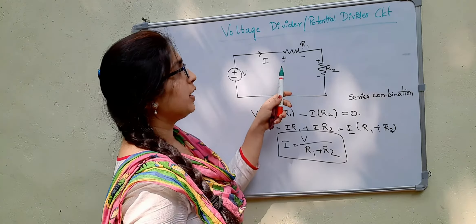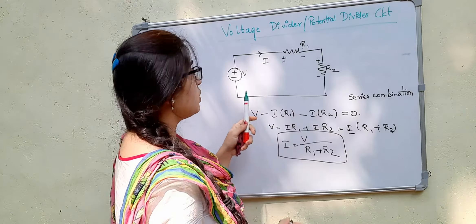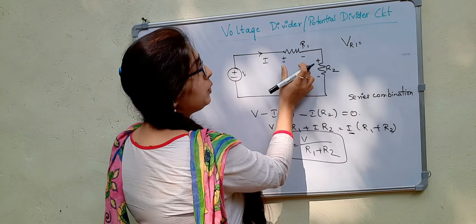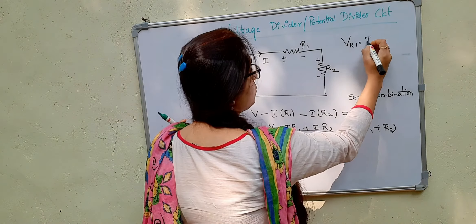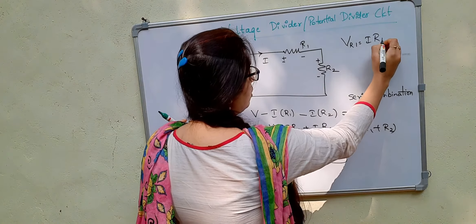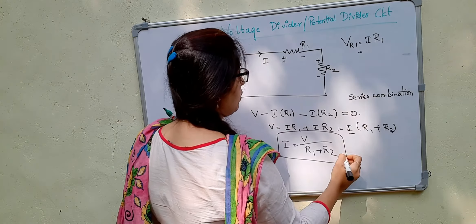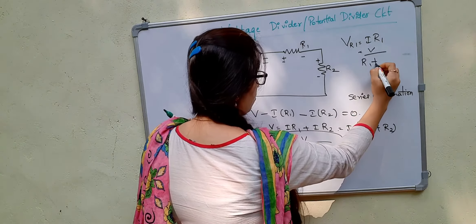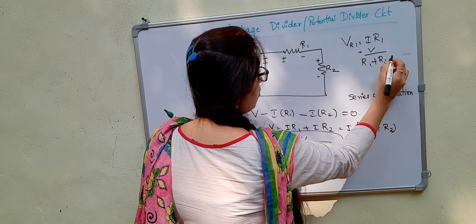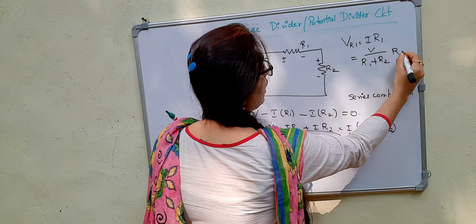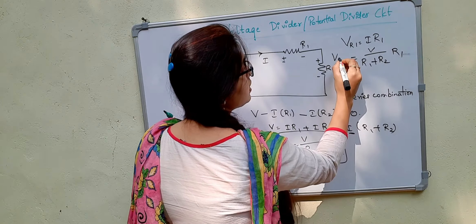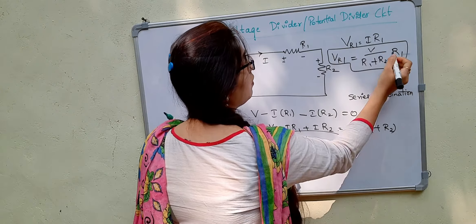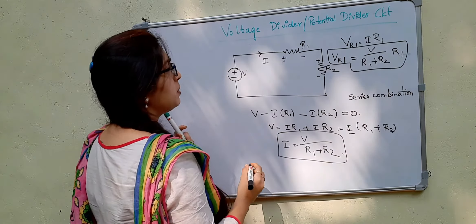Now, if we have to find the voltage across resistor R1, that will be equal to I into R1 from Ohm's law. Substituting this value, we get V R1 as V into R1 divided by R1 plus R2.